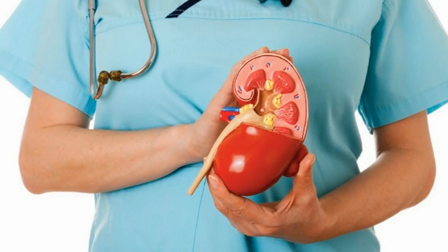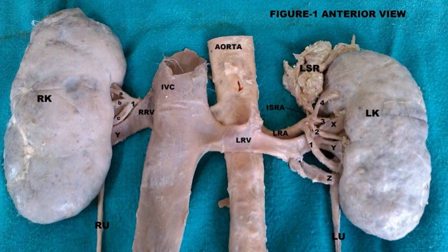Adrenal glands are located on the top of each kidney. A major branch of the abdominal aorta enters from the concave side of the kidney. The major role of the kidney is to filter excess chemicals and wastes from the blood, which is entered through renal arteries. These wastes extracted from the blood are eliminated from the body as urine.